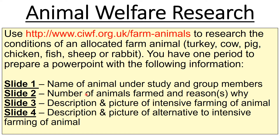Here's a task worth doing to get this established in your head and relate it to particular animals. Use the CIWF website and research the conditions of an allocated farm animal. Include the number of animals farmed and the reason why — turkey, cow, etc. — a description and picture of the intensive farming of that animal, and then an alternative. Just a little example of what we were talking about.